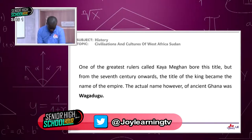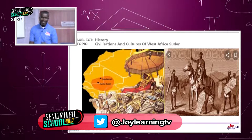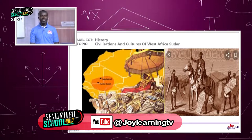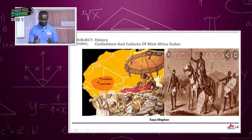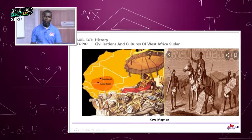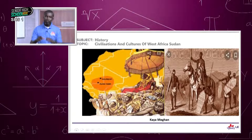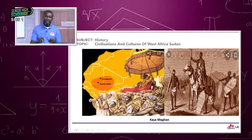In your screen is Kayamegan, a very powerful chief — seen sitting in his palanquin, and also on his horse with fighters around him. He was the one who bore the title Ghana. But over a period of time, the title he bore became the name of the empire Ghana, relegating the actual name Ouagadougou to the back bench.